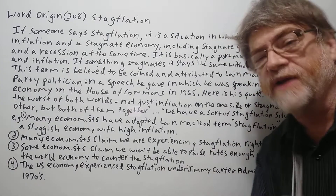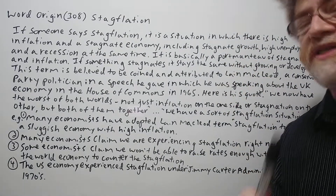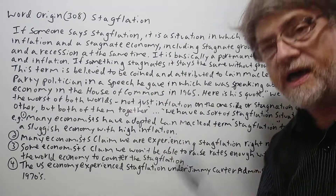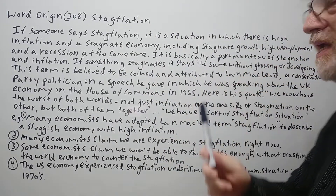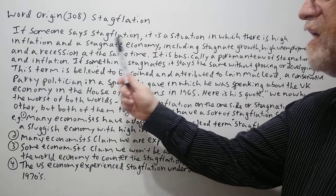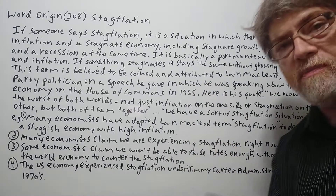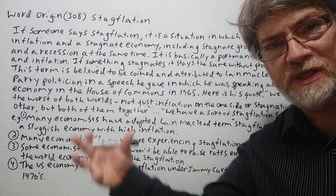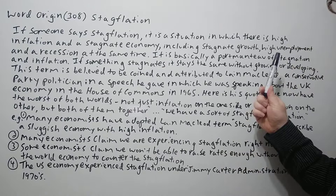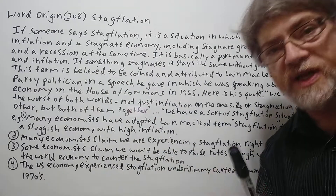Stagflation is a situation in which there is high inflation and a stagnant economy, including stagnant growth, high unemployment, and a recession at the same time. It is basically a portmanteau — when we take two words and squeeze them together to form a new word — a portmanteau of stagnation and inflation.